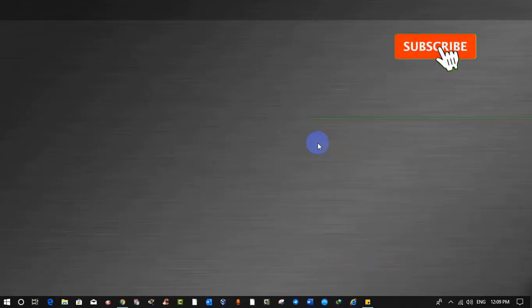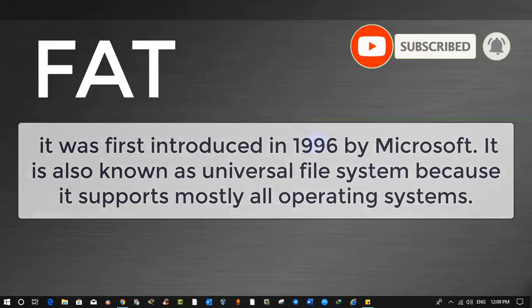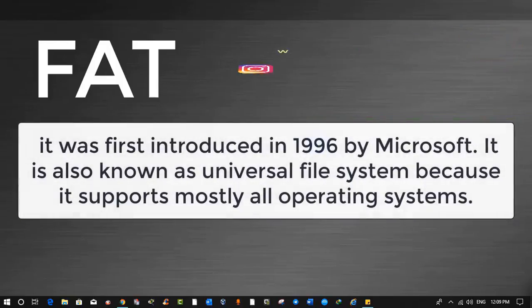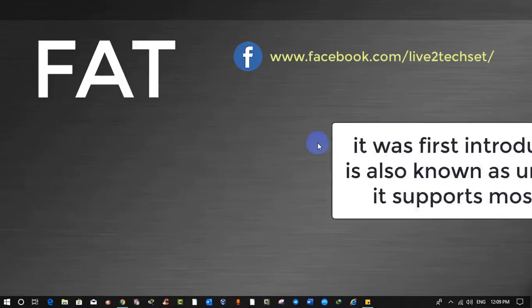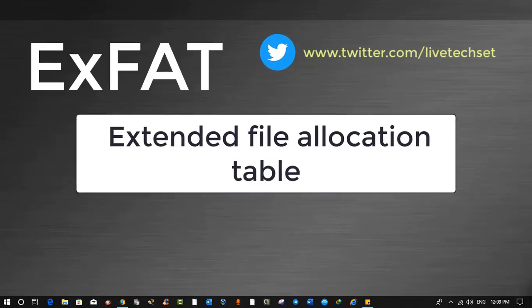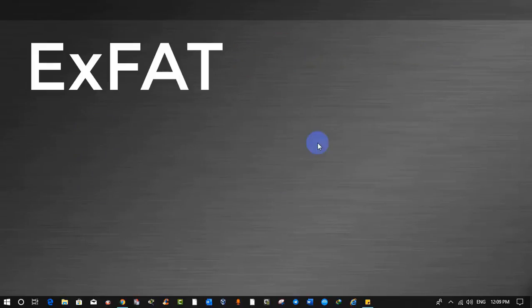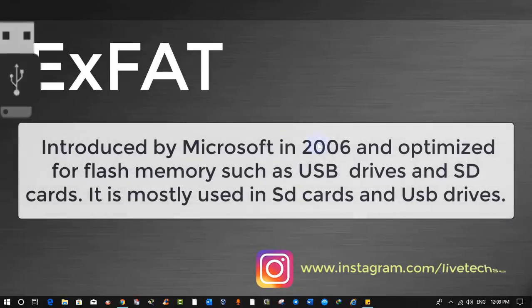FAT stands for File Allocation Table. It was first introduced in 1996 by Microsoft and is also known as the universal file system because it supports mostly all operating systems. exFAT stands for Extended File Allocation Table. This is the second file system, introduced by Microsoft in 2006, and is optimized for flash memory such as USB drives and SD cards.